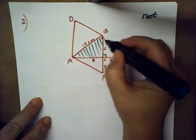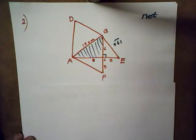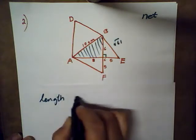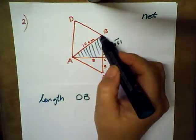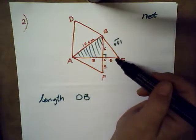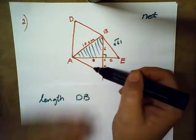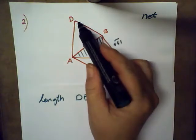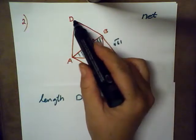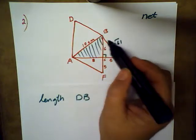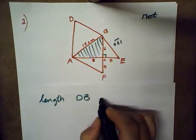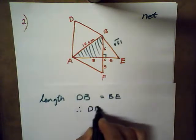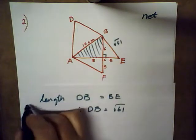Now write down the length of DB. Think about it: you have a net, this little piece will fold up, it will join here, E and F will join, that one will fold up and this would be like a little top lid. So this side DB will fit exactly on BE, so I can say DB equals BE. The length would be square root of 61, and that was part two.